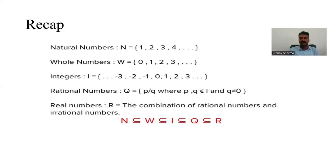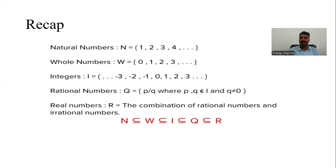Whole numbers are something that start from zero, and the denotation will be capital W. While integers are plus and minus — that means the negative numbers and positive numbers along with zero. Zero is considered as neither negative nor positive. So I plus capital I is the denotation, but if I write I with a plus superscript, that represents positive integers. I minus represents negative integers. But zero is neither negative nor positive. So this is something that you should keep in mind when dealing with integers.